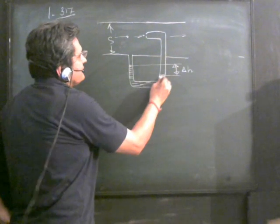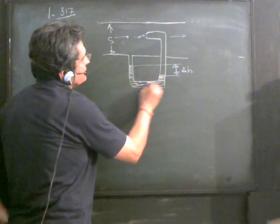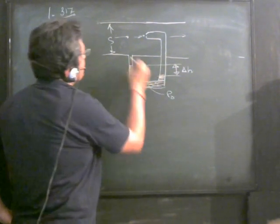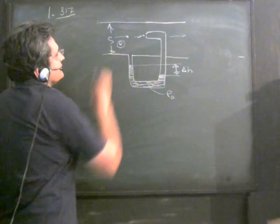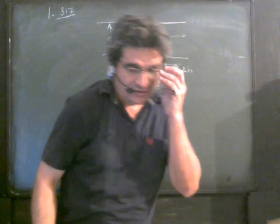There is a difference in the level of the liquid in the pitot tube as shown. The density of the liquid is ρ₀ and density of gas is ρ. We have to find the rate of flow.